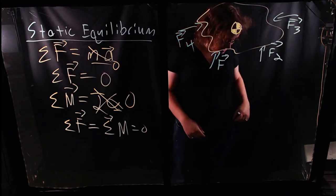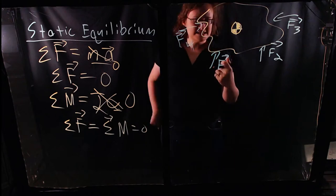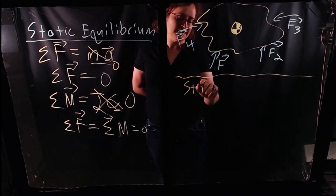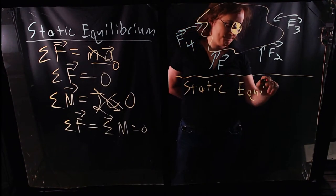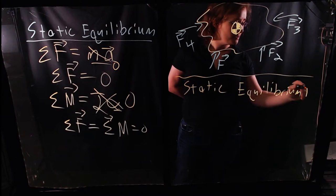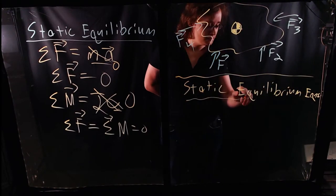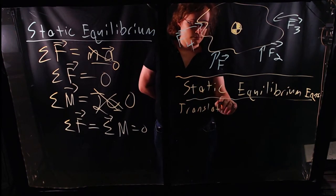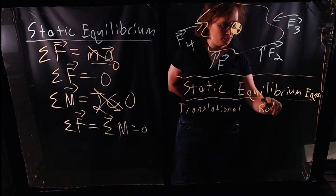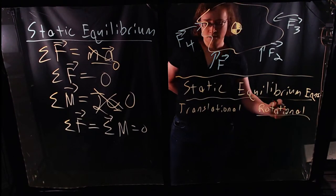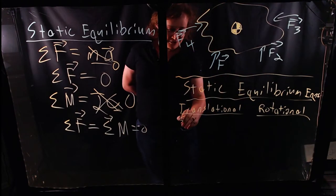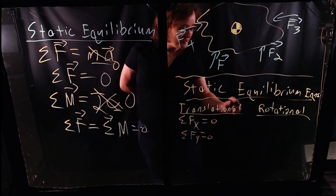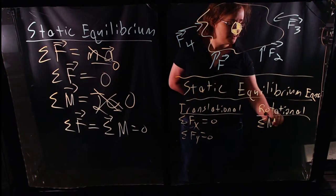From a structural engineer's perspective, we tend to break things down in terms of Cartesian or rectangular coordinates. So our equations for static equilibrium become translational and rotational equations. In a 2D system, we can have a balance of forces about x and y: the sum of forces in the x direction is zero, the sum of forces in the y direction is zero. And in a 2D system, we also have a summation of moments equal to zero.